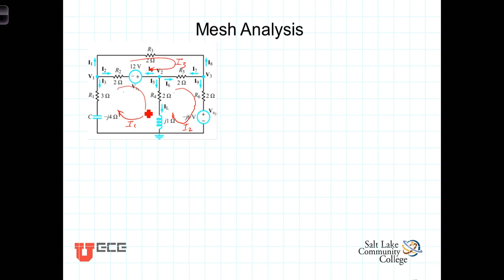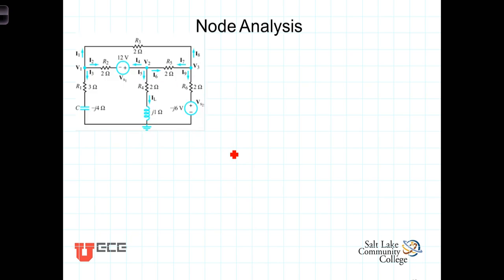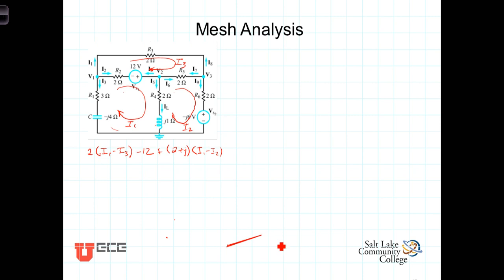Starting with the left-hand loop, going in the direction of the mesh current, we've got 2 times I1 minus I3, then minus 12 volts — that's a voltage increase so it'll be a minus. Coming down here we've got plus the impedance in that branch, which is 2 plus j, times the current flowing down, which is I1 minus I2. Coming back around and going up the left-hand branch we've got plus 3 minus j4 times I1, and the sum of those terms equals 0.